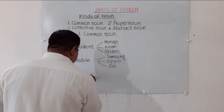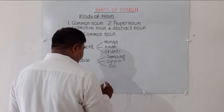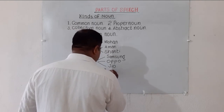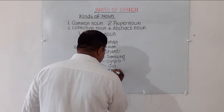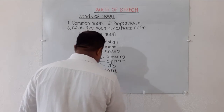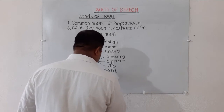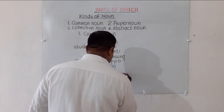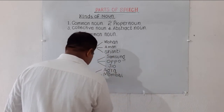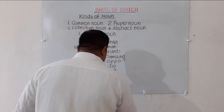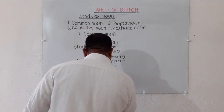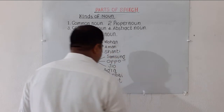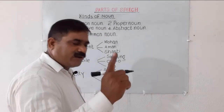City. City is a generic name for Agra, Mumbai, and Meerut. Are you getting it? Let me write down one more word.